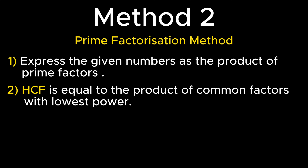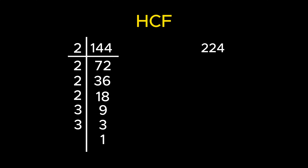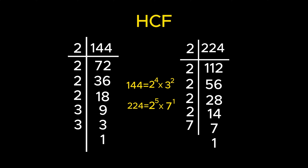Let's understand this method with an example. Consider 144 and 224 as the numbers whose HCF needs to be determined. Knowledge of divisibility tests is helpful for finding the prime factors. Now, 144 is expressed as 2 raised to the power 4 multiplied by 3 raised to the power 2, whereas 224 is expressed as 2 raised to the power 5 multiplied by 7. Since only 2 is the common factor, HCF of 144 and 224 equals 2 raised to the power 4, which simplifies to 16. Thus 16 is the highest number that divides both 144 and 224 giving remainder 0.